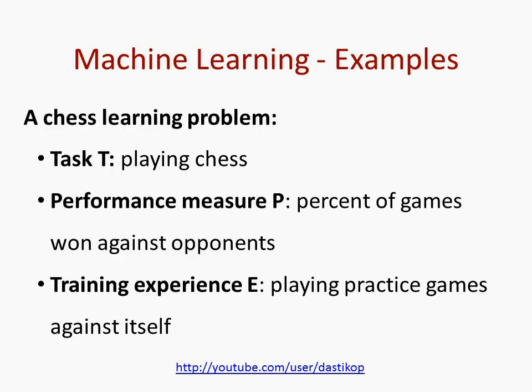Now let us consider some examples of machine learning. The first example is a chess learning problem. Here the task T is playing chess. The performance measure P is the percentage of games won by the program against opponents. The training experience E is playing practice games against itself.